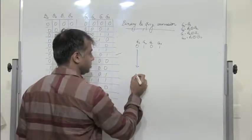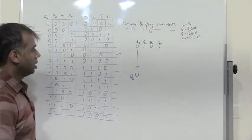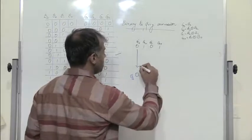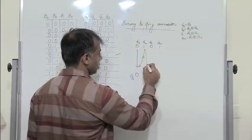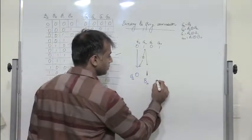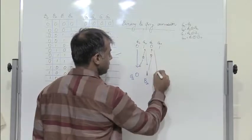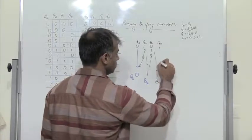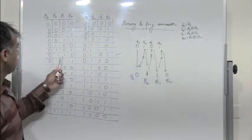So let us see how we can get this. B3 is nothing but G3. What is B2? B2 is B3 XOR with G2: 0 XOR 1 is 1. What is B1? XOR these two: 1 XOR 0 gives 1 again. And what is B0? B0 is B1 XOR G0: 1 XOR 1 is 0. So I get 0, 1, 1, 0.